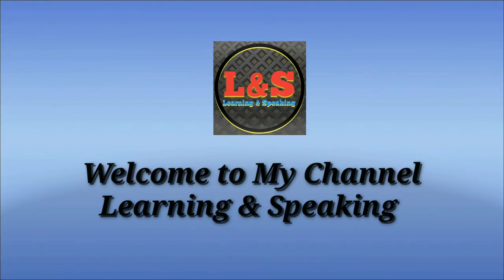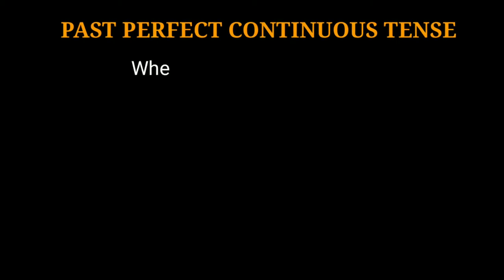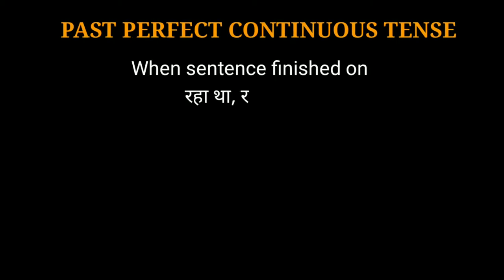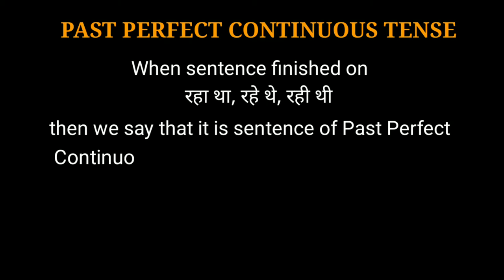Hello friends and welcome to my channel Learning and Speaking. Today we will learn what is past perfect continuous tense. Past perfect continuous tense kya hota hai? When a sentence finishes on रहा था, रही थी, रहे थे, then we say that it is a sentence of past perfect continuous tense.